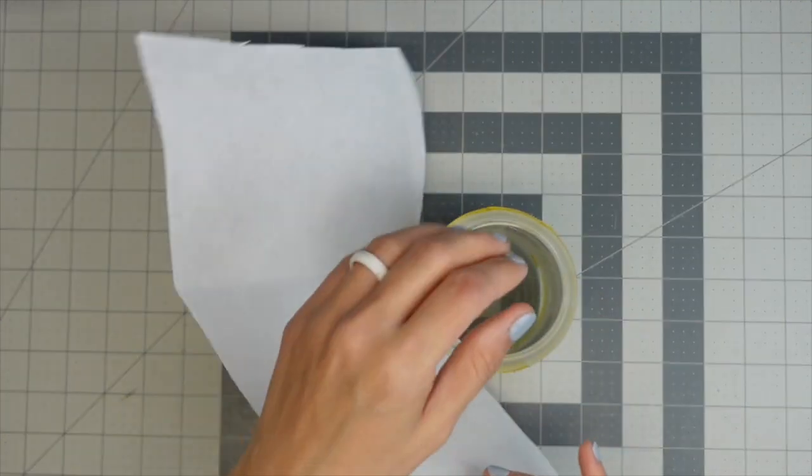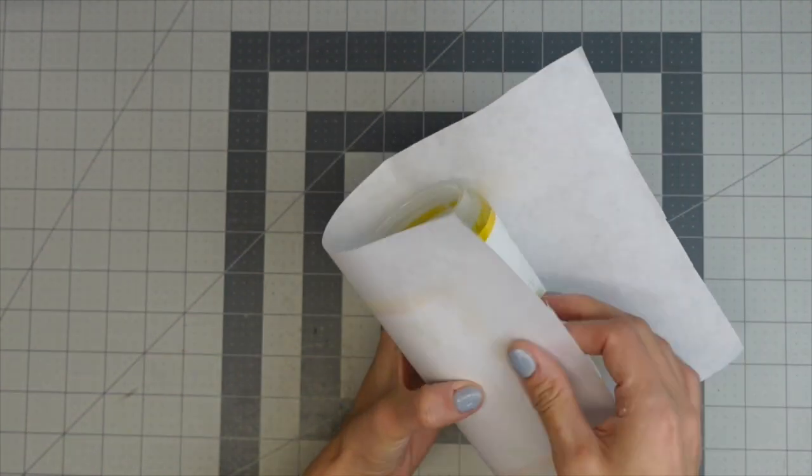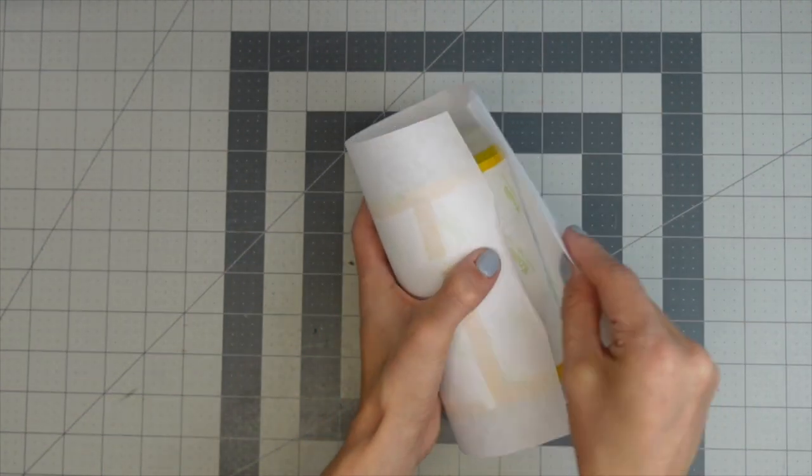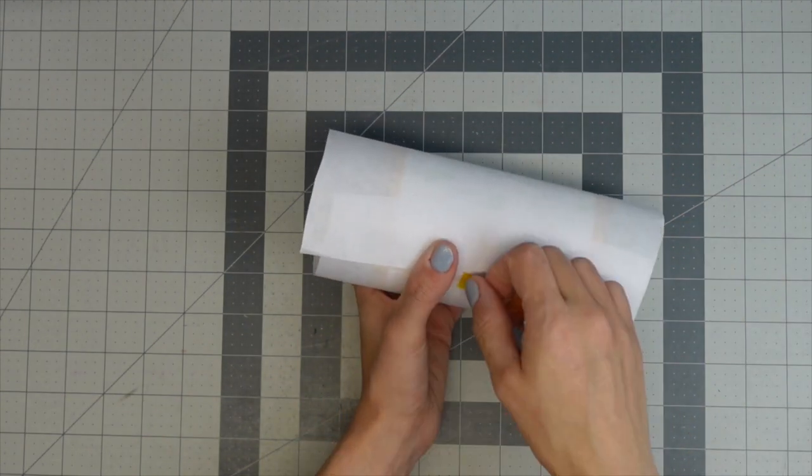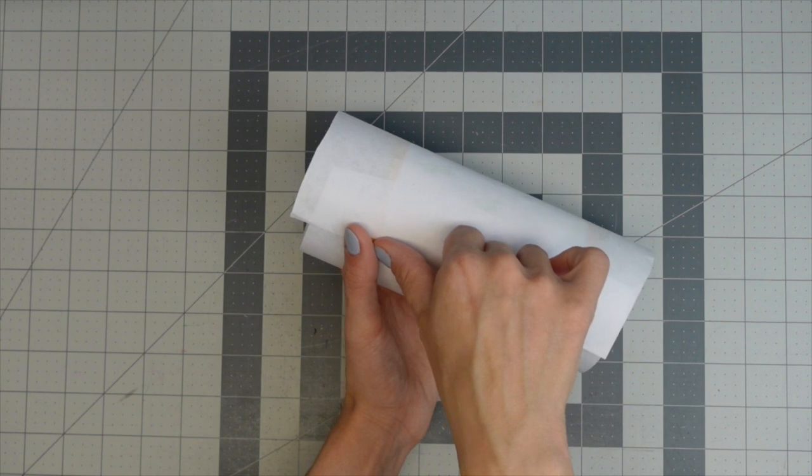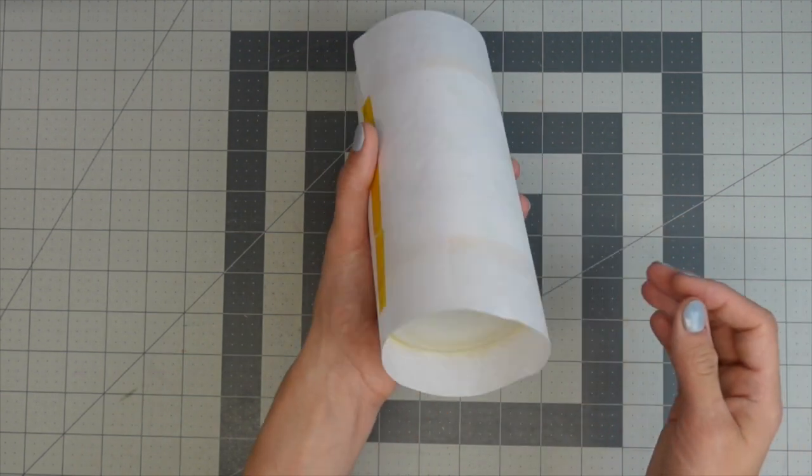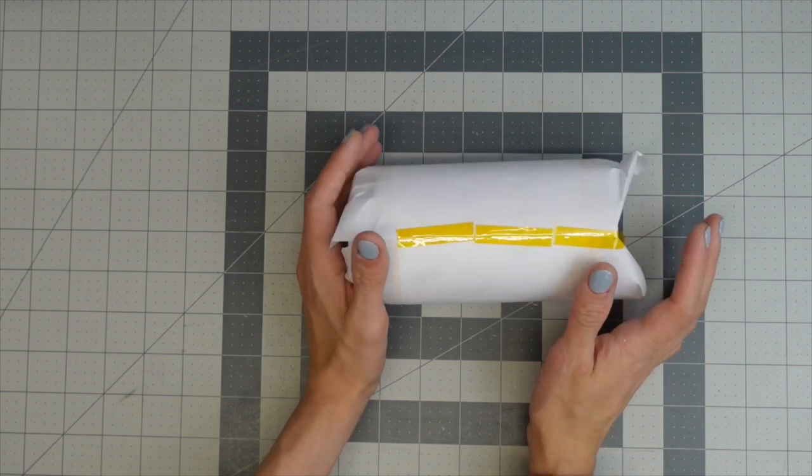Then you're going to get your butcher paper and you're going to wrap that around your tumbler. I personally kind of like to tape my butcher paper. If you're doing this in a convection oven you can put some of the shrink wrap on it. I'm just going to tape this just so that it makes it easier to put in my mug press. So now this is ready to go to our tumbler press.